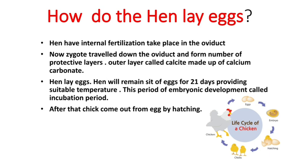The yolk is the fatty layer. After that there is a transparent fluid called the protein layer, which we name albumin. Outside that is a transparent layer called the cell membrane. And at last, there is a layer made up of calcium carbonate, and that is called the calcite layer.